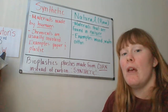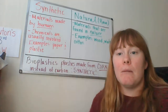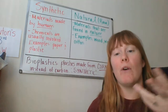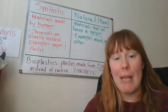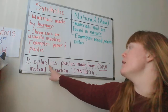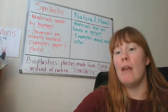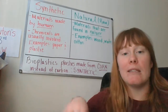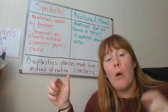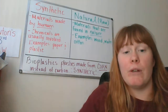Just as a review: natural materials are materials that are found in nature. Synthetic products are human-made, usually involve chemicals, and examples include plastic and paper. Over the next two weeks, we are going to be going more into bioplastics — how they're made and how they can impact our future. If you have any questions, send me a message on Schoology. There is also a synthetic versus natural reading just below this video in Schoology that you can read if you'd like more information.